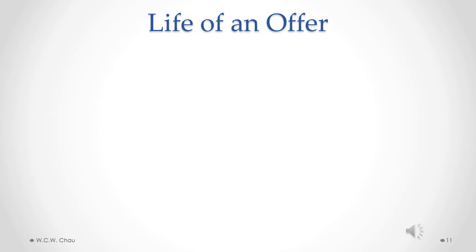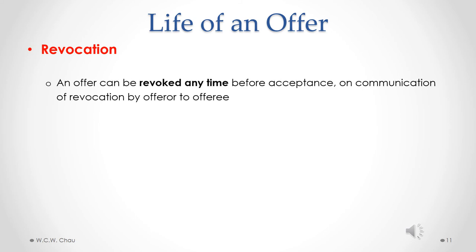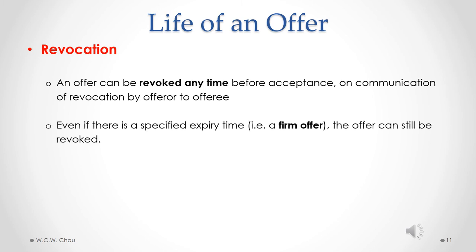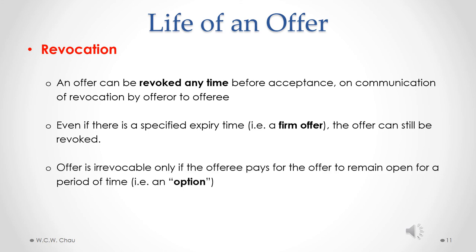Let's look at the rules about revoking an offer. An offer can be revoked any time before acceptance, upon communication of the revocation by the offeror to the offeree. So as long as the offer has not been accepted, it can be revoked at any time. The second rule is that even if a specified expiry time has been set — in other words, a firm offer has been made — the offer can still be revoked as long as it has not been accepted yet. However, an offer is irrevocable if the offeree has paid something of value, usually money, for the offer to remain open for a period of time. We call that an option.